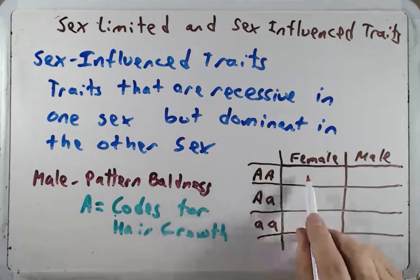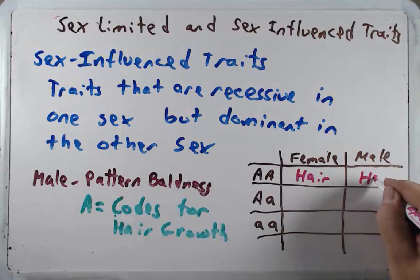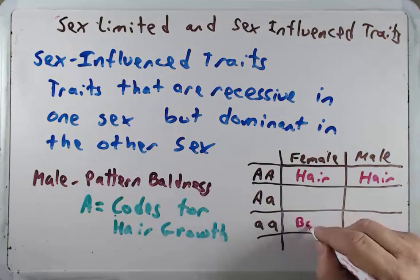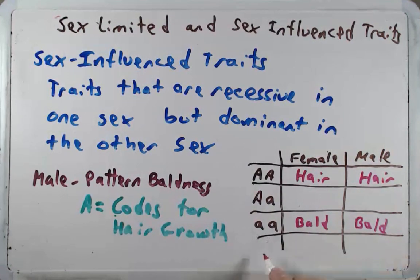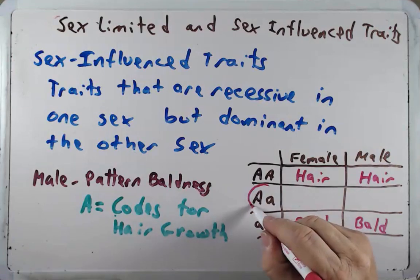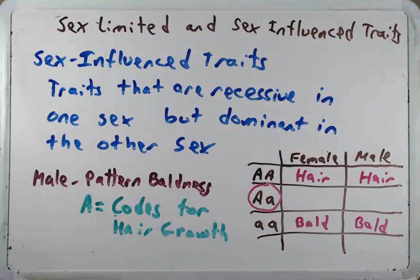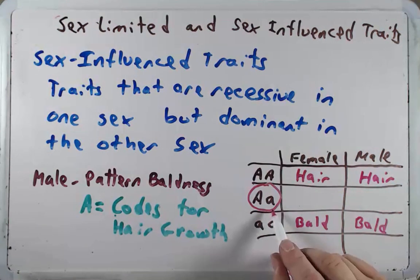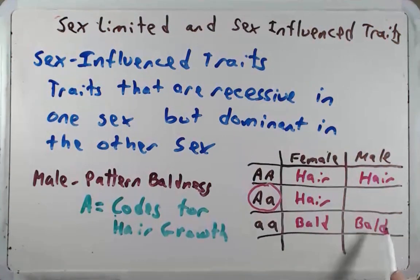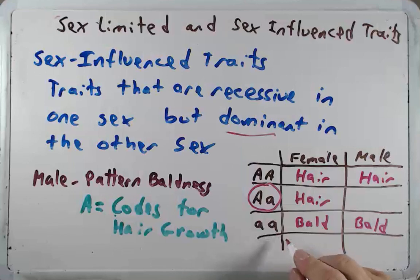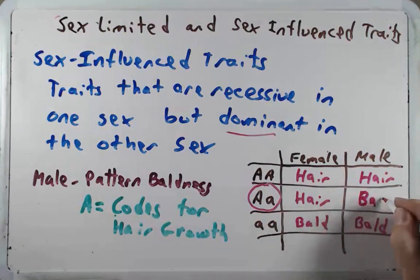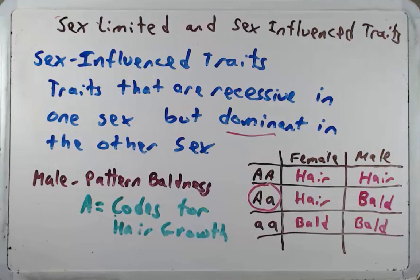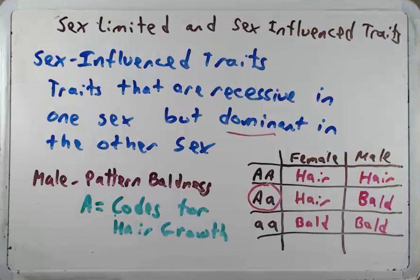Someone who is big A big A — whether female or male — has a full head of hair and no male pattern baldness. Both males and females who are homozygous recessive little a little a would be bald. The key difference comes with the heterozygous: in females, this trait is recessive, so big A little a females have hair. In males it's dominant, meaning one allele is enough to exert its effect, so big A little a heterozygous males will be bald. Typically, a woman with little a little a won't be completely bald — there will be some wisps of hair — whereas the man tends to be fairly bald.